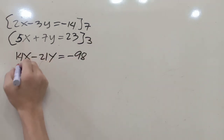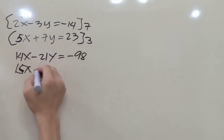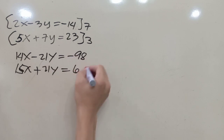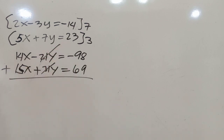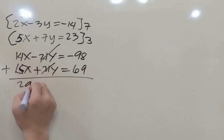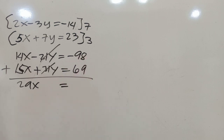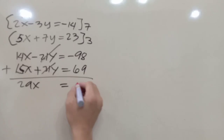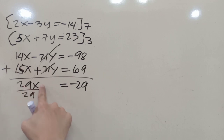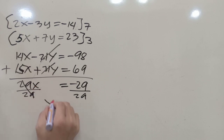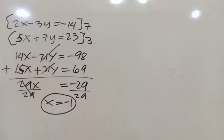And 3 times 5x plus 7y equals 23, giving 15x plus 21y equals 69. Adding the two equations, 21y minus 21y cancels to 0. We get 14x plus 15x equals 29x, equal to negative 98 plus 69. Since 98 is larger, the result is negative: 29x equals negative 29. Dividing by 29, x equals negative 1.